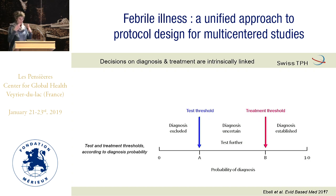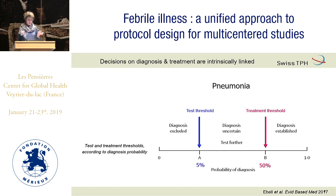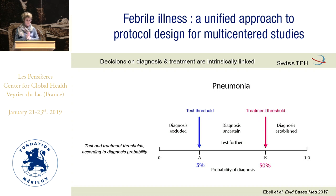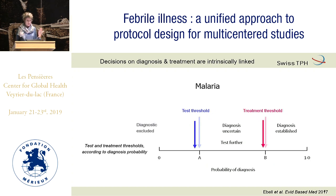How are we supposed to think about treatment? What a clinician is supposed to do is evaluate the probabilities of a certain diagnosis. If the probability is below a certain threshold — the test threshold — the diagnosis can be excluded. If the probability is above a certain threshold, maybe 50% for pneumonia, the diagnosis is established and the patient should be treated. If the probability falls in between, more testing is needed.